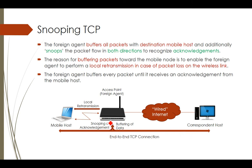In between the mobile host and the correspondent host, the access point acts as a buffering element. It snoops the communication link to check what data and acknowledgements are going on between the mobile host and the correspondent host. By snooping that data, it decides how to retransmit lost packets and how to handle negative acknowledgements.